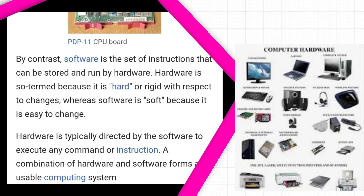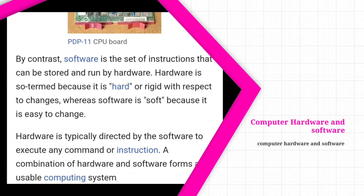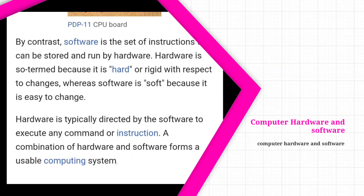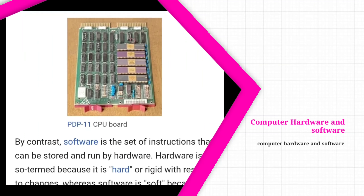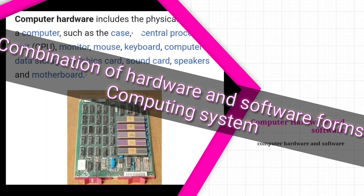Software is called 'soft' because it is easy to change. Hardware is typically directed by the software to execute any command or instruction. A combination of hardware and software forms a usable computing system.